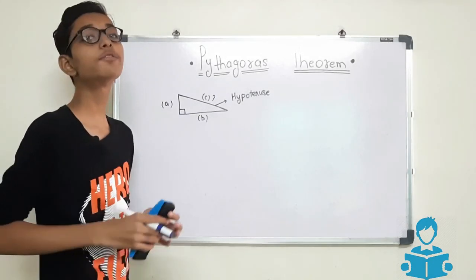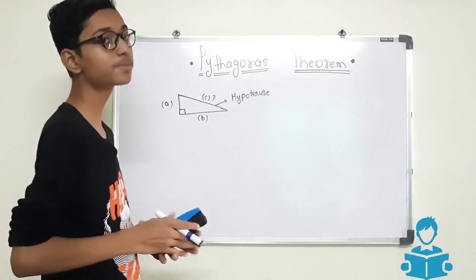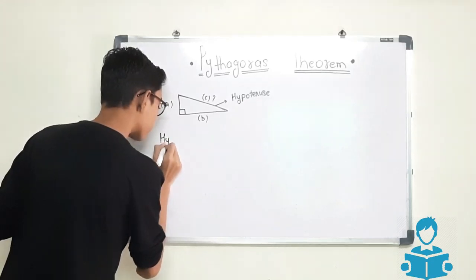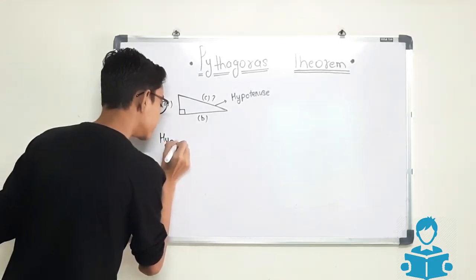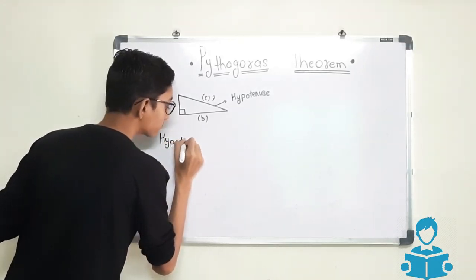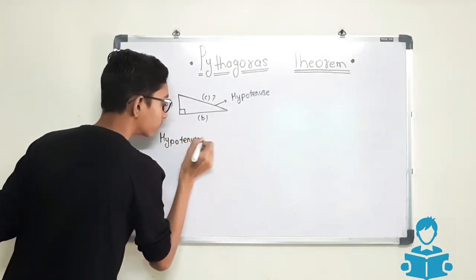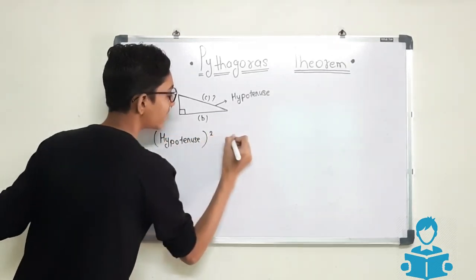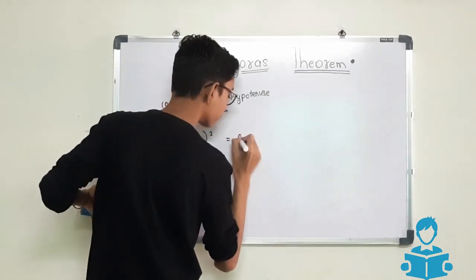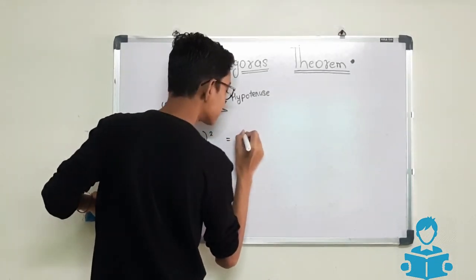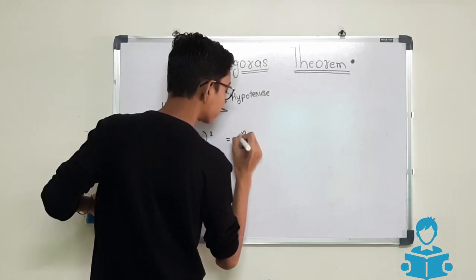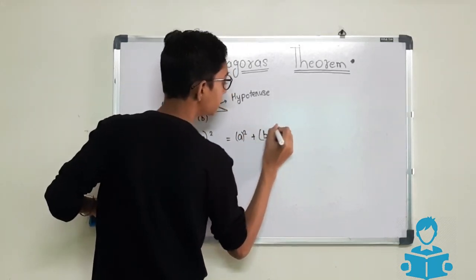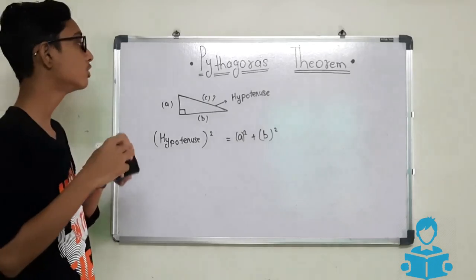Now we will see the formula which is known as Pythagoras theorem. It is: hypotenuse square is equals to A square plus B square. This is the formula.